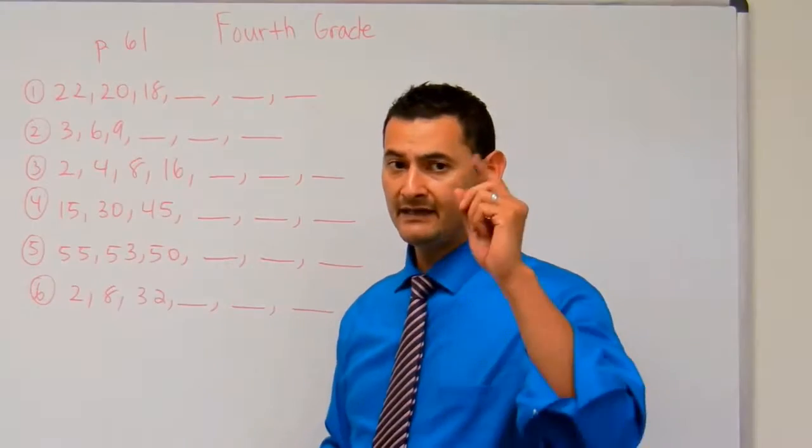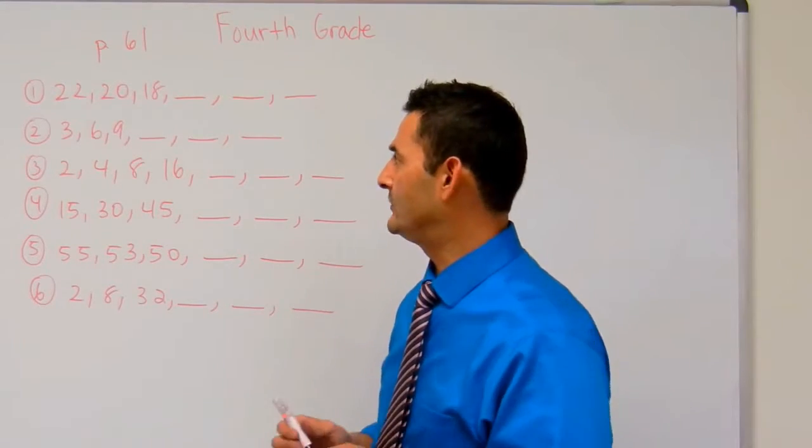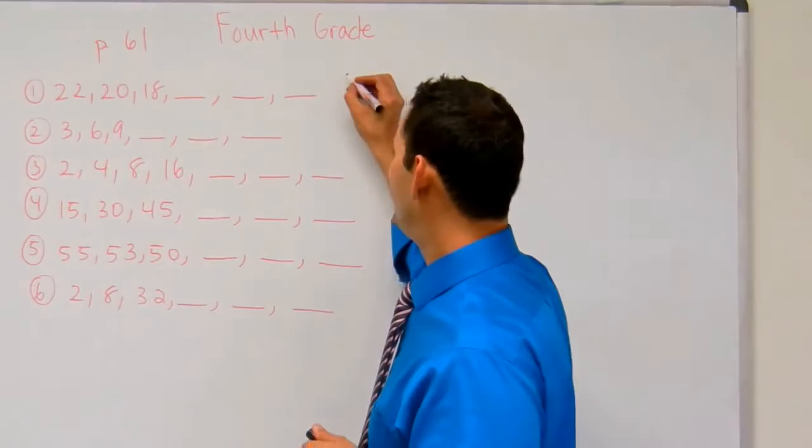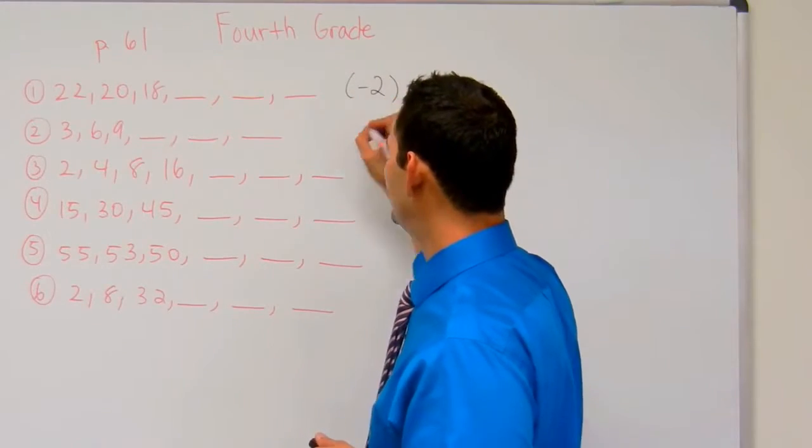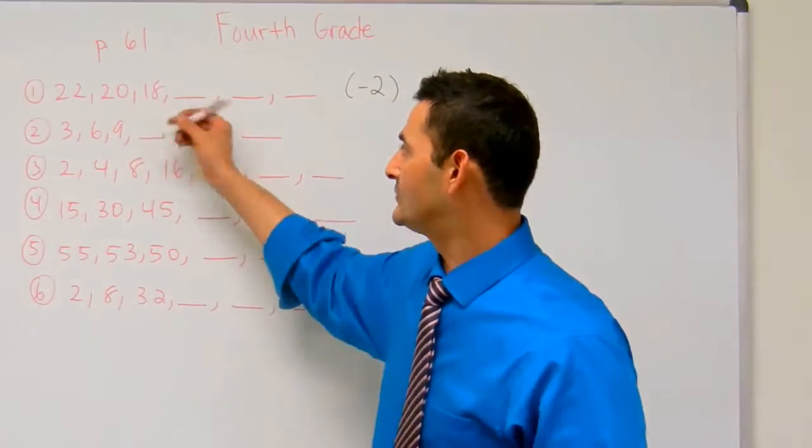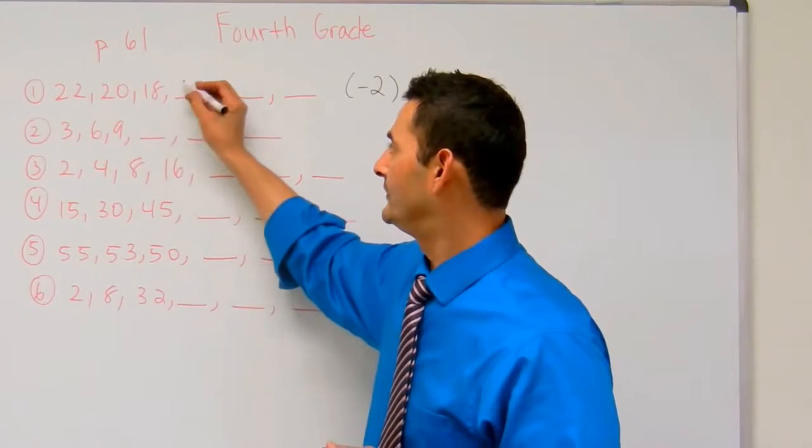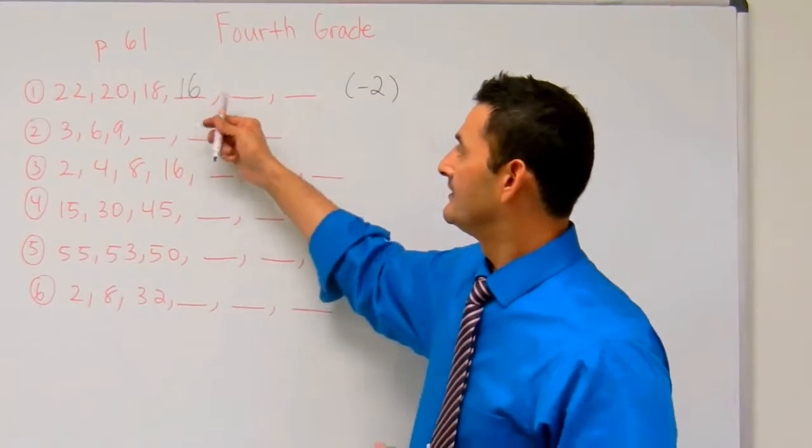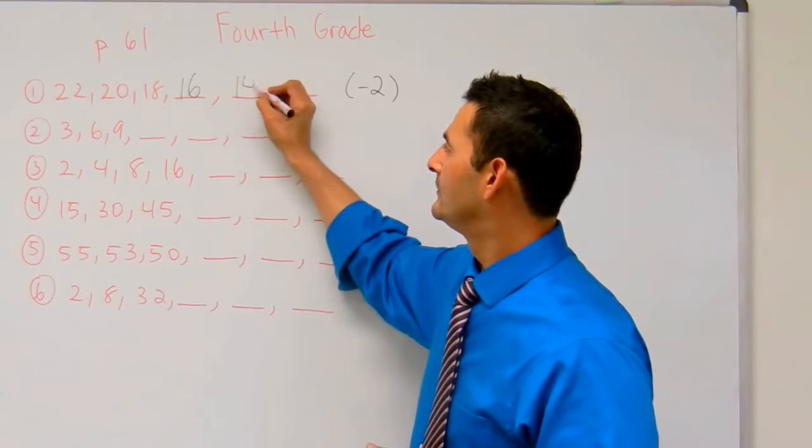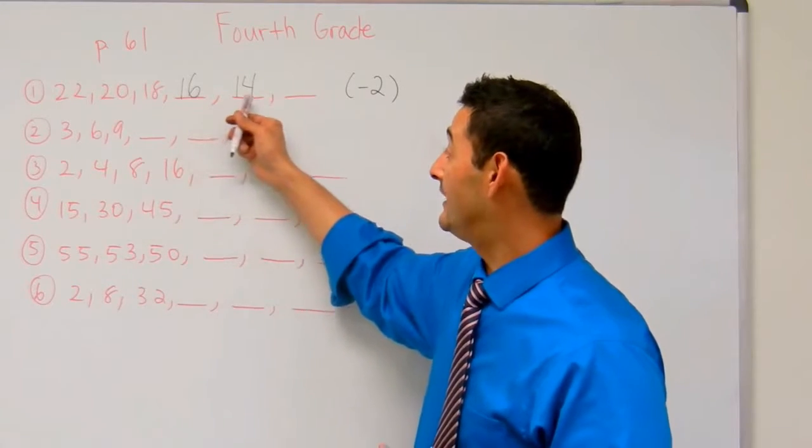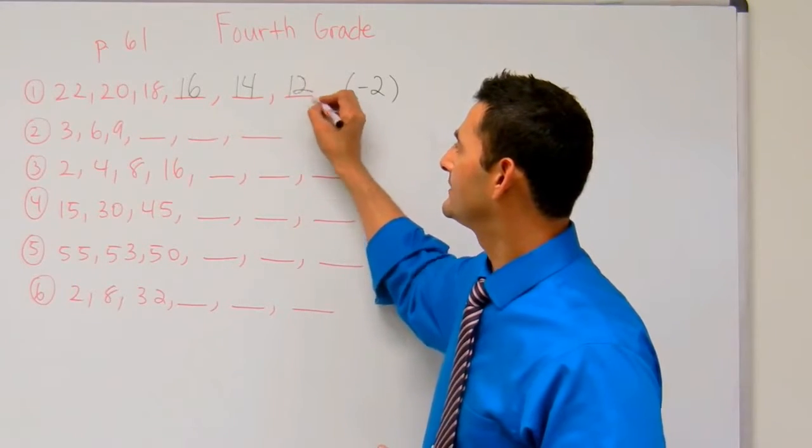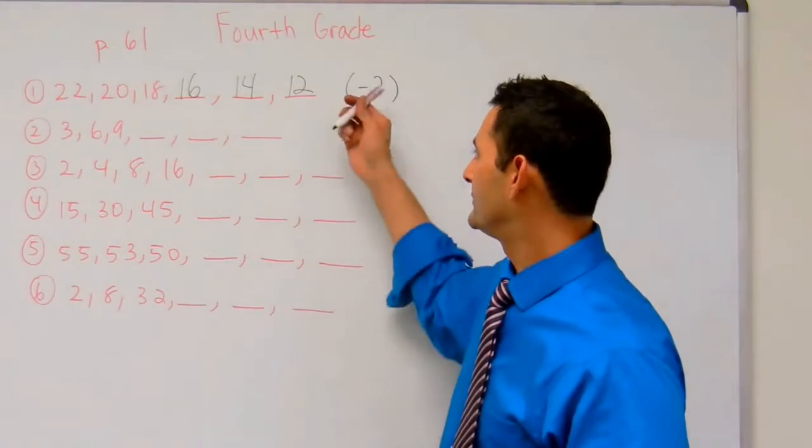20 to 18, I subtracted by 2. So here, I know that we are subtracting by 2. So 18 minus 2, that's 16. 16 minus 2, 14. 14 minus 2, that's 12. We're subtracting 2.